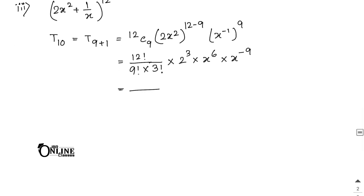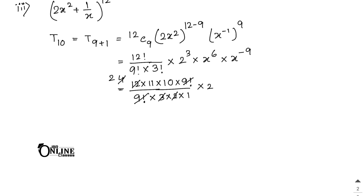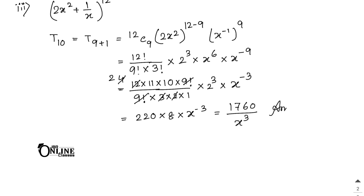12C9 = 12!/(9! · 3!) = (12 × 11 × 10)/(3 × 2 × 1) = 220. Then 2^3 = 8, and x^(6−9) = x^(−3). So T10 = 220 · 8 · x^(−3) = 1760/x³ as the final answer.